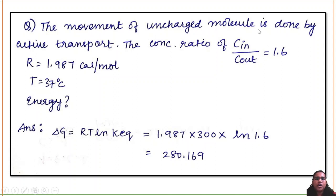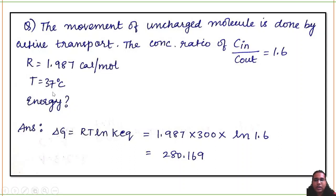Twenty-second question: movement of uncharged molecules by active transport. Concentration ratio Cin/Cout = 1.6, R = 1.987 cal/mol·K, T = 27°C = 300 K. Delta G = RT ln(Cin/Cout) = 1.987 × 300 × ln(1.6). Solve to get the delta G value in cal/mol.